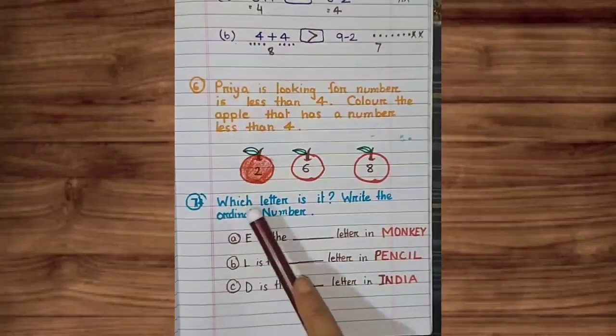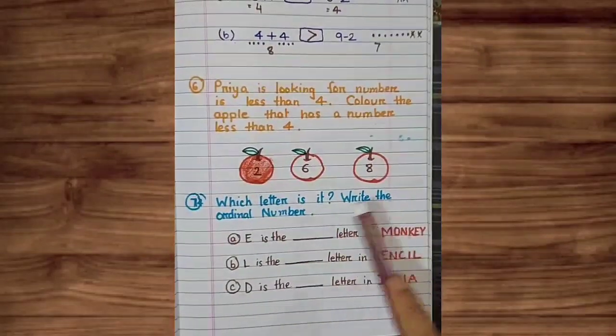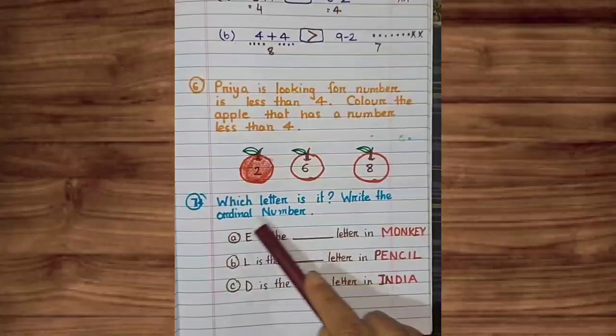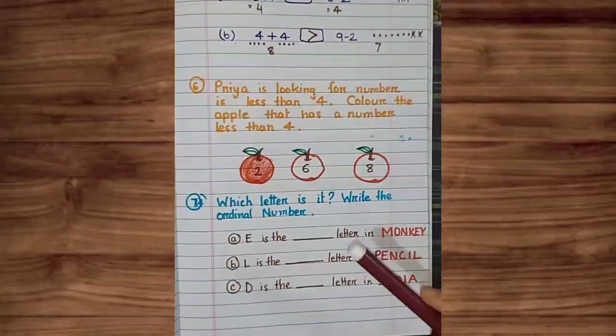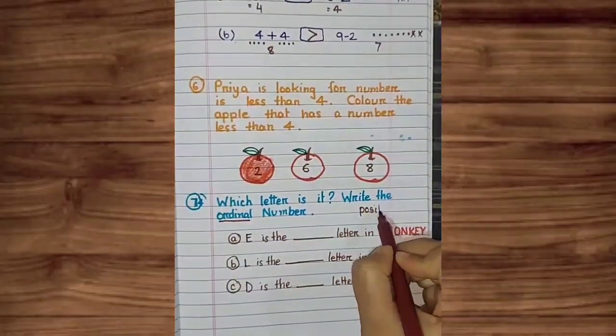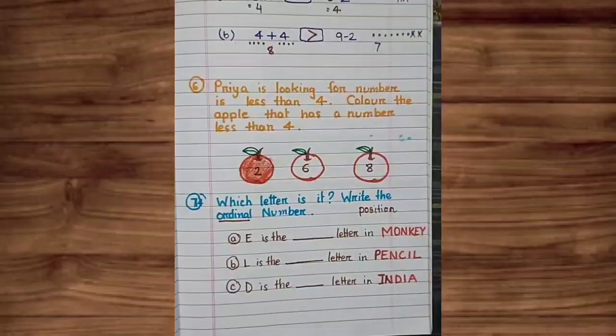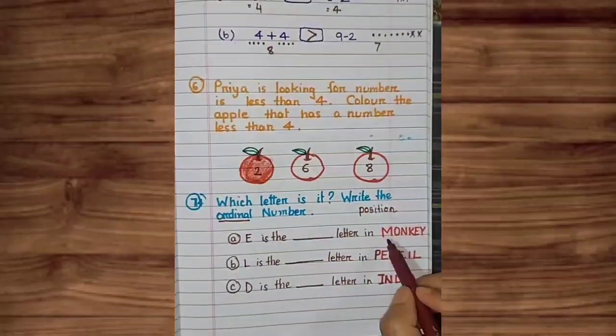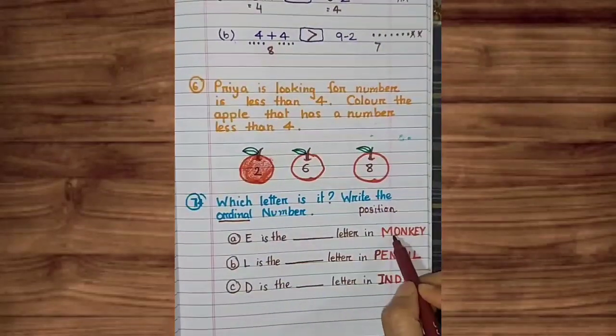Which letter is it? Write the ordinal number. Ordinal means the position of the number. Number 1. E ka position kaha pe hai? Monkey mein.